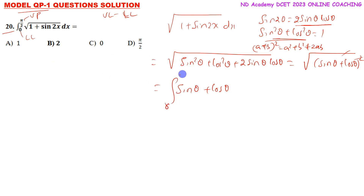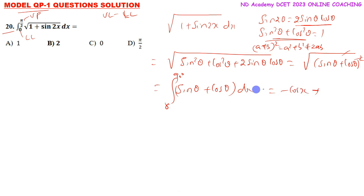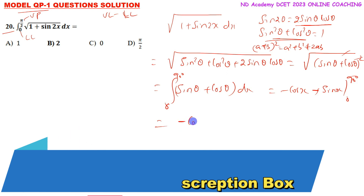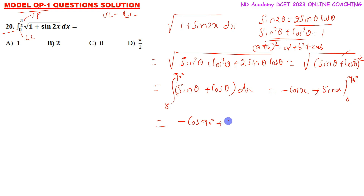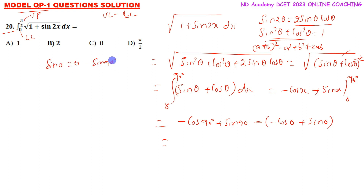So square root of (sin x plus cos x) squared equals sin x plus cos x. Integrating from 0 to pi by 2 (0 to 90 degrees), the integral of sin x is minus cos x and integral of cos x is sin x. So the result is minus cos x plus sin x, evaluated from 0 to pi by 2.